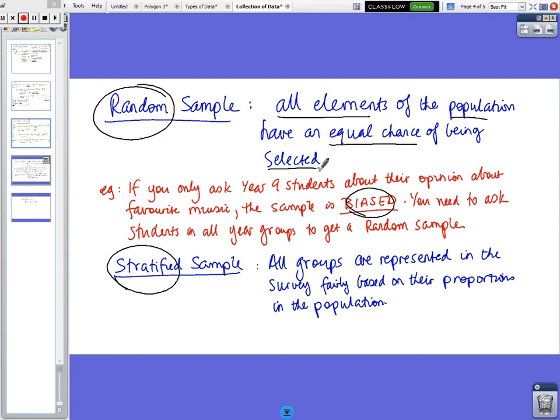All elements have an equal chance. But for instance, if we were looking at music tasting at Marici College as a sample, if you only ask Year 9 students, you would get a biased sample to what Year 9's like. So it has to represent everybody, not just one particular group of people.